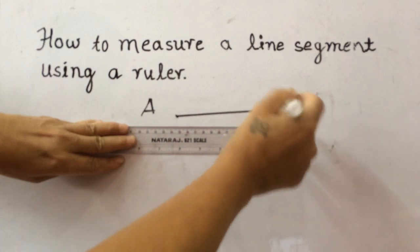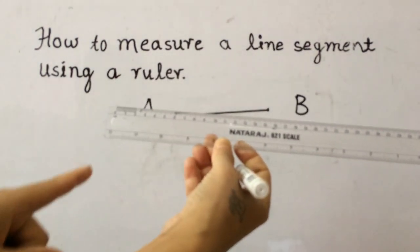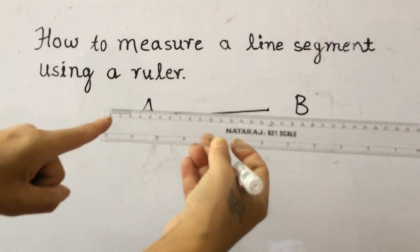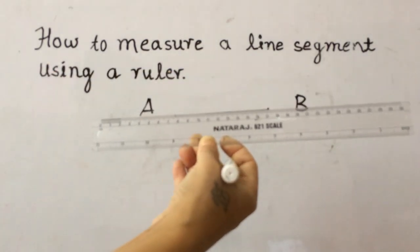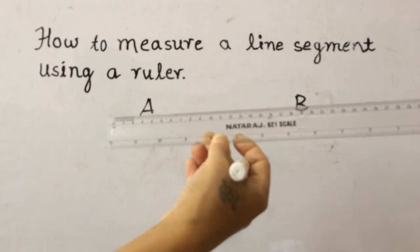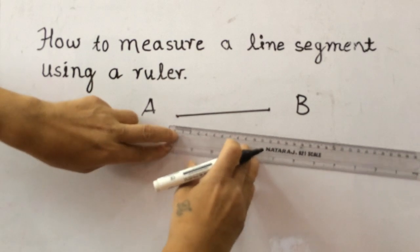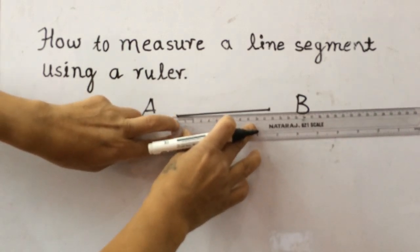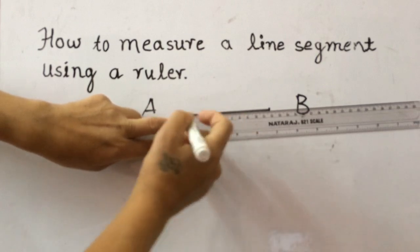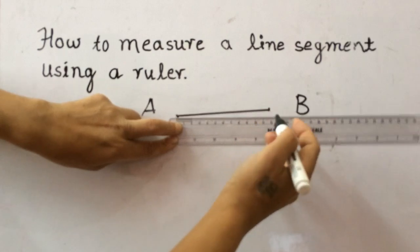Point A is the starting point and point B is the endpoint. This is the scale. We can see 0, 1, 2, 3, 4, 5, 6, and so on. This scale is 35 cm long. Let's place this scale with the mark 0 at point A. This is the starting point. Now this line is at 12.